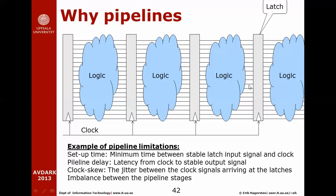There is also imbalance between pipeline stages. Going back to the car factory analogy, the worker putting on four tires has a much easier task than the worker installing the engine, so the tire worker sits idle. The clock frequency is determined by the worker with the most work — the one installing the engine. Unless each instruction can be chopped into exactly equally-sized work portions, there will be imbalance in the pipeline stages, and all these factors together impose overhead that limits how many pipeline stages you really want.